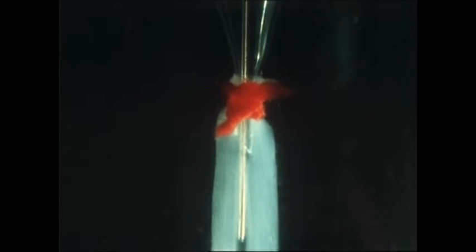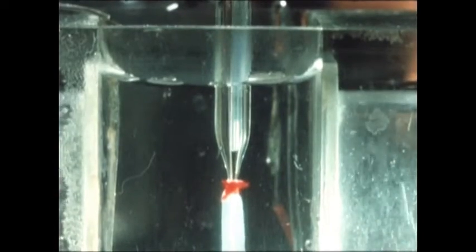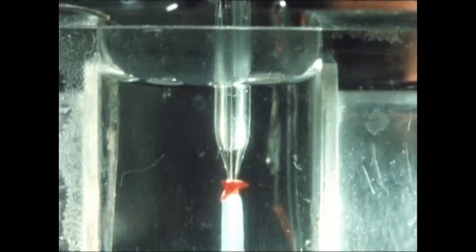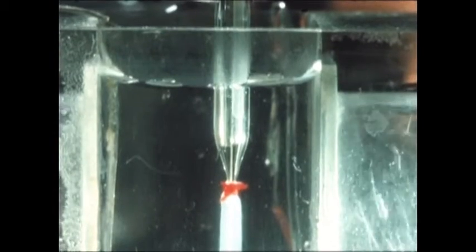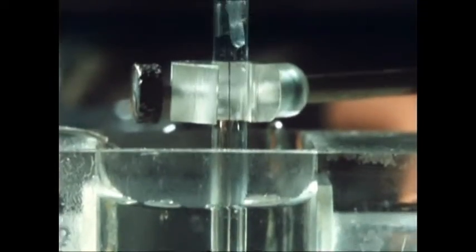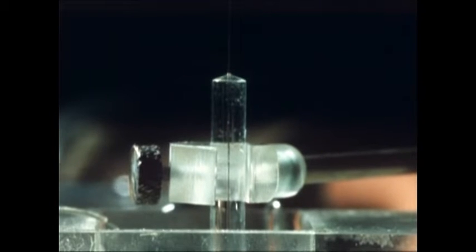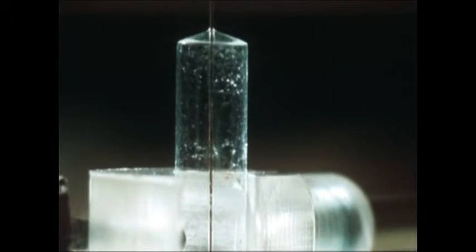This cannulated and perfused axon can, of course, be treated in exactly the same way as an intact one. A simple internal electrode will, as before, give the resting potential. Here, about 80 millivolts. But now, unlike the earlier experiments, it is a simple matter to change the internal solution. If the new solution, which rapidly displaces the old, contains little potassium, a sudden change occurs. The resting potential drops to a small fraction of its former value.